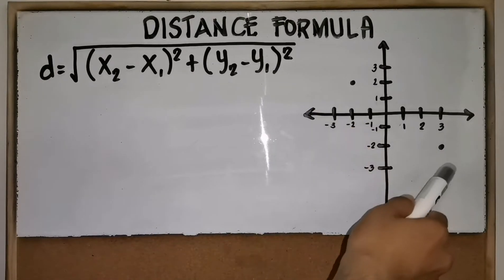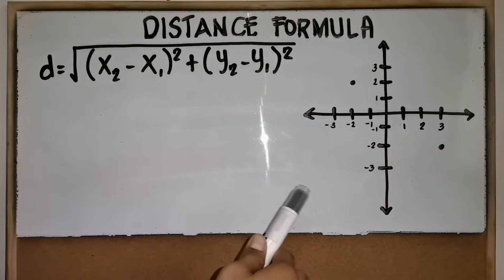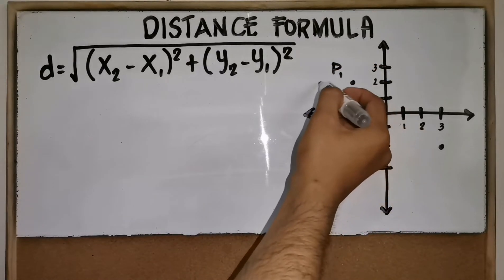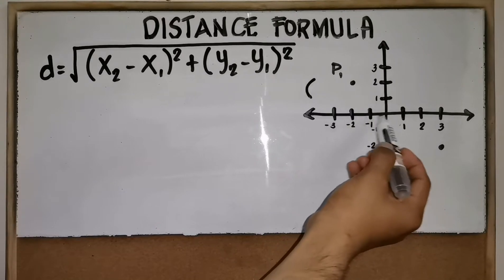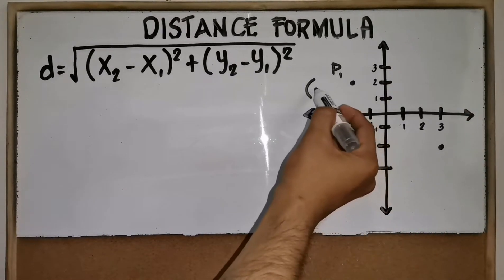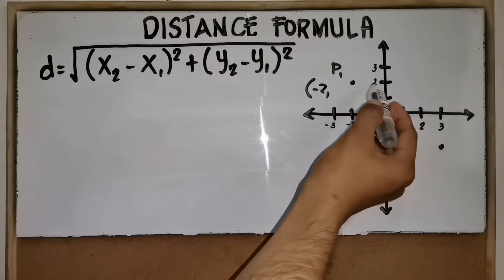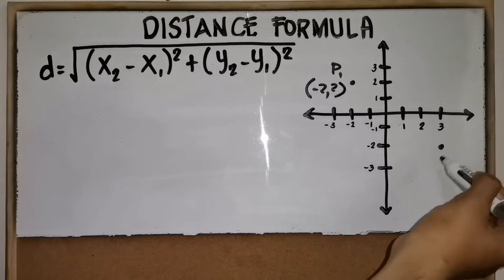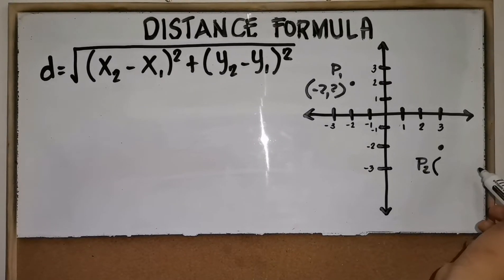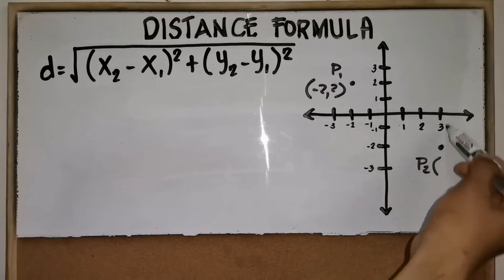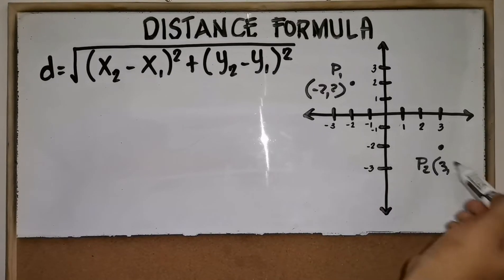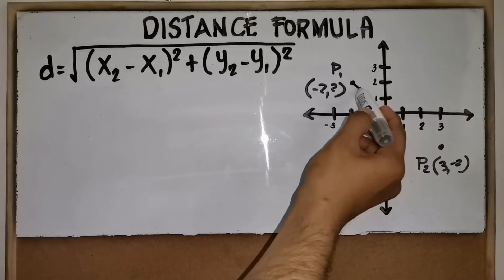Now let's try to solve the distance between two points using the distance formula. Our first point has the following coordinates: the x is negative 2 while the y is 2. Our second point has the following coordinates: the x is 3 while the y is negative 2.